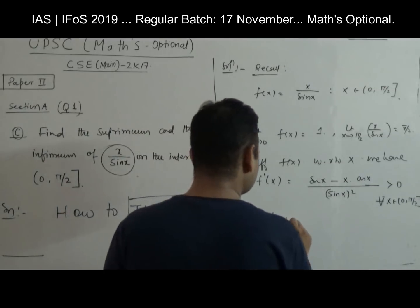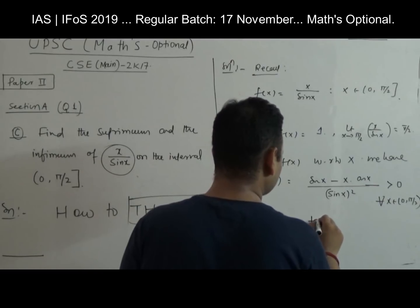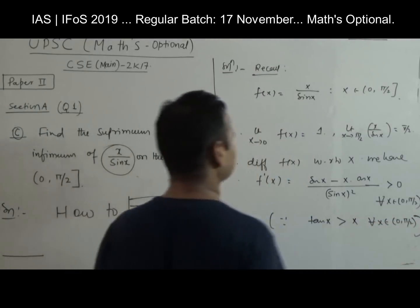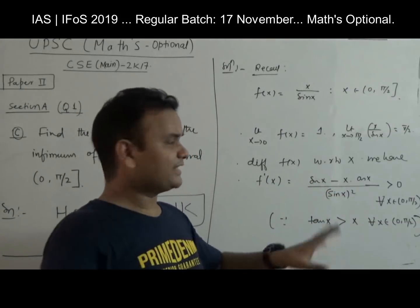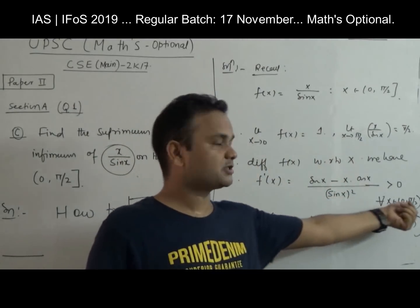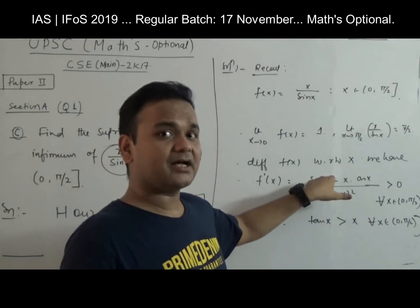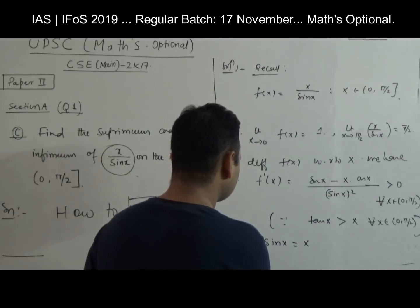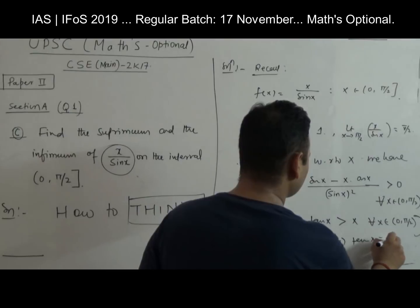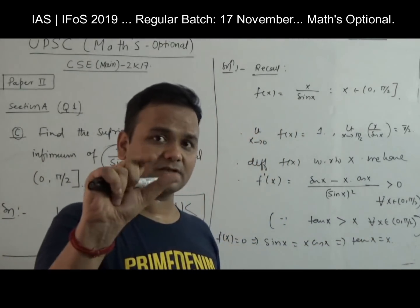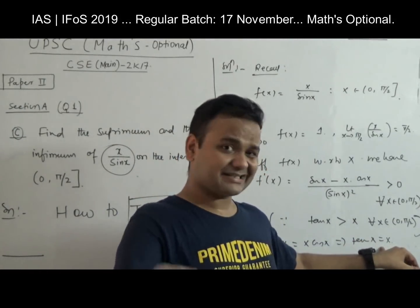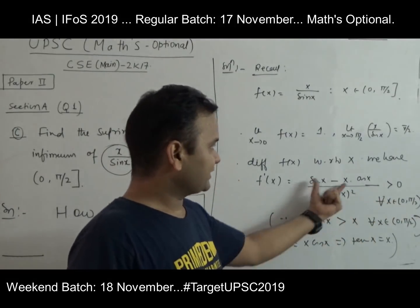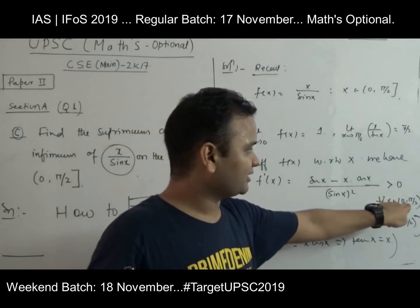The reasoning: f′(x) = 0 implies sin(x) = x·cos(x), which means tan(x) = x. Does there exist x in (0, π/2) such that tan(x) = x? The answer is no, because tan(x) > x for all x in (0, π/2). Hence the numerator sin(x) − x·cos(x) is always positive in this interval, so f′(x) > 0 throughout (0, π/2). The derivative is positive because tan(x) > x in the interval (0, π/2).